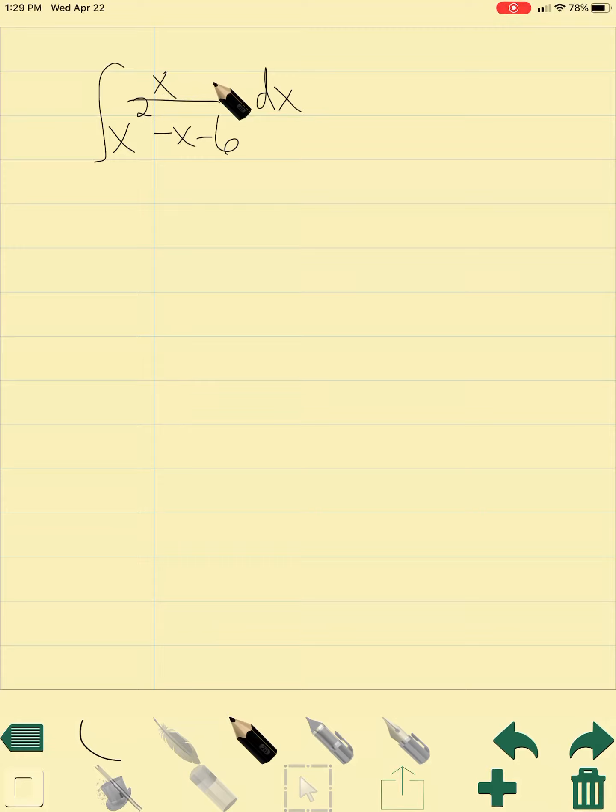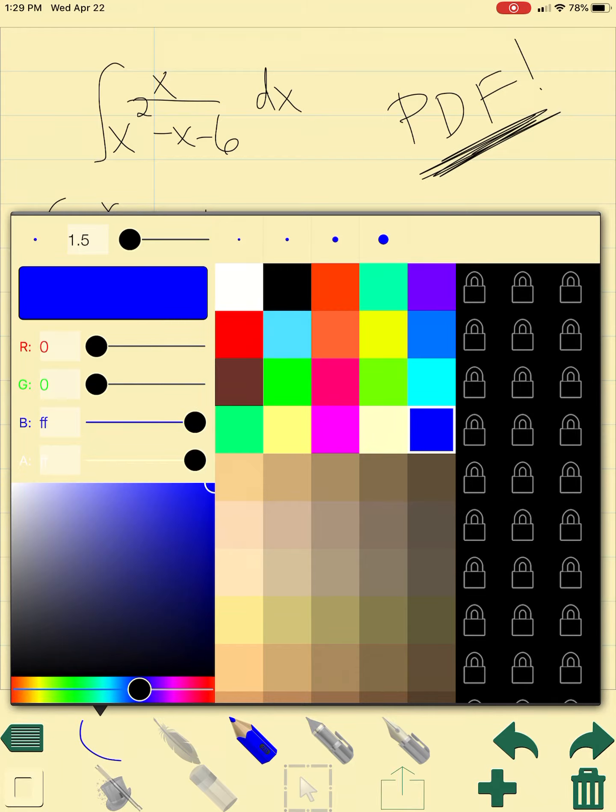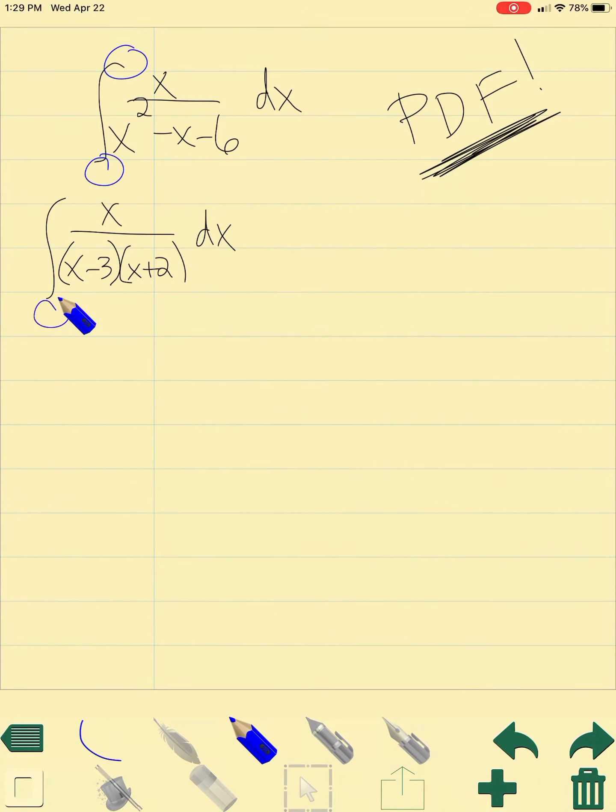So what we need to do is actually partial fraction decomposition, or PDF. For those of you that remember this, PDF is one of my favorite things to do. So what we do is we factor the denominator, and we get x over x minus 3 times x plus 2. Also notice that this is an indefinite integral because there are no numbers at the top or bottom. So we can go through now and do PDF. This is going to be a over x minus 3 plus b over x plus 2 equals x over x plus 2 times x minus 3.